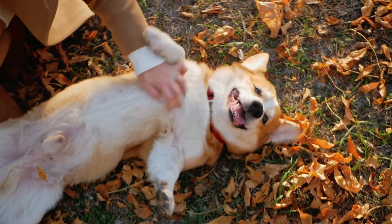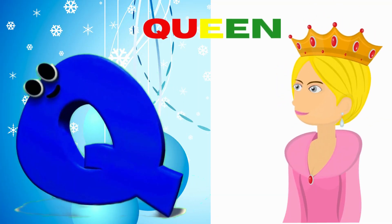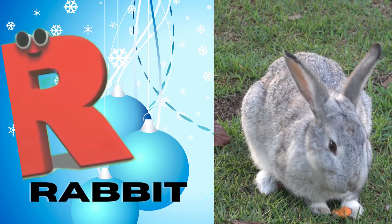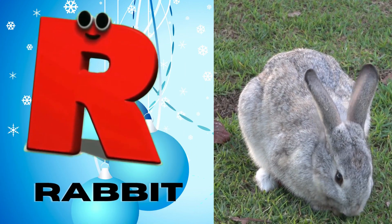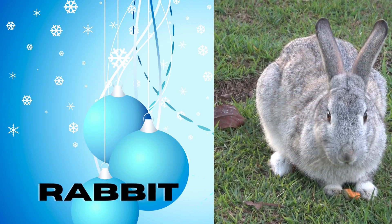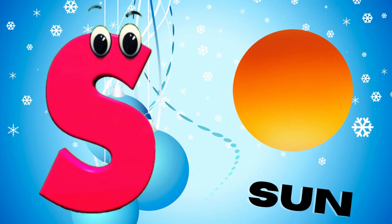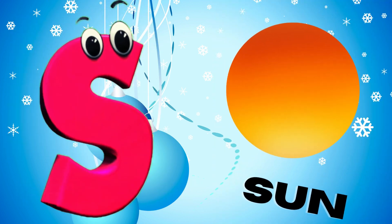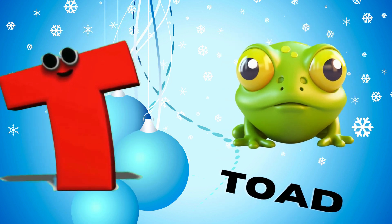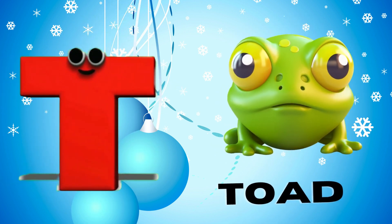Q is for queen, qu-qu-queen. R is for rabbit, r-r-rabbit. S is for sun, s-s-sun. T is for toad, t-t-toad.